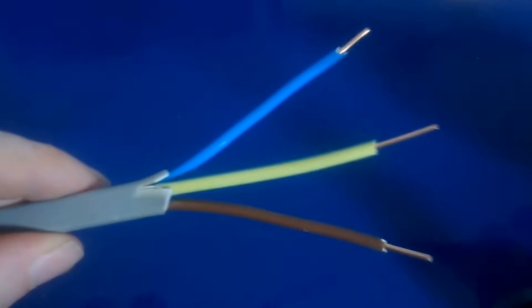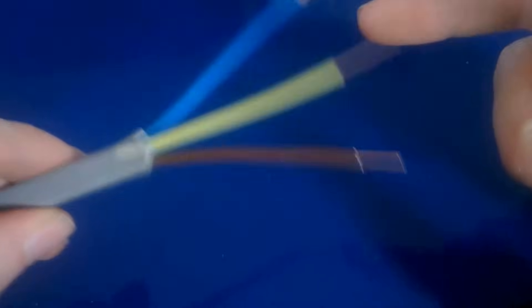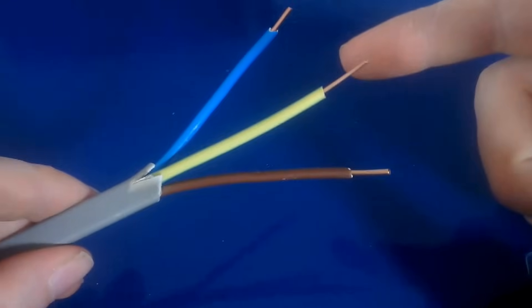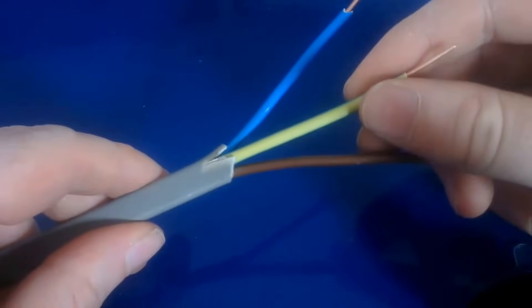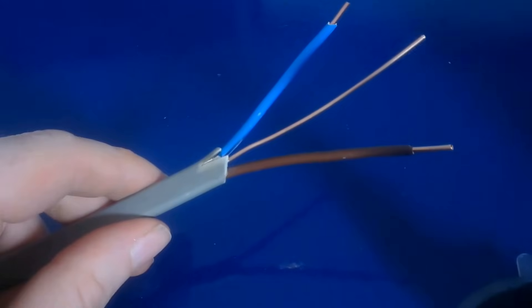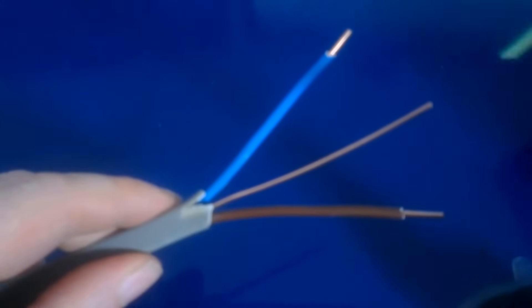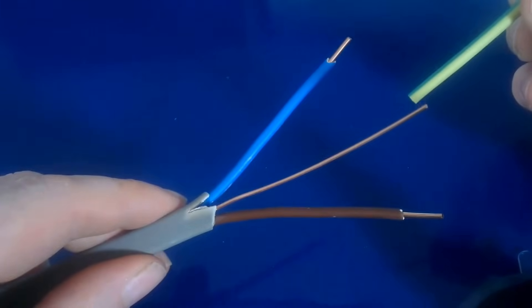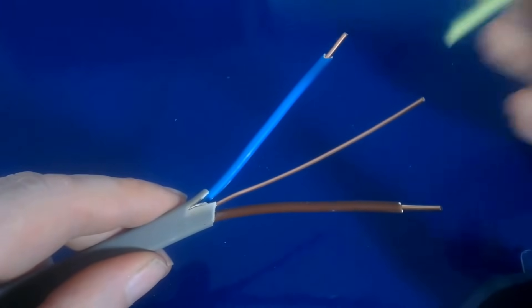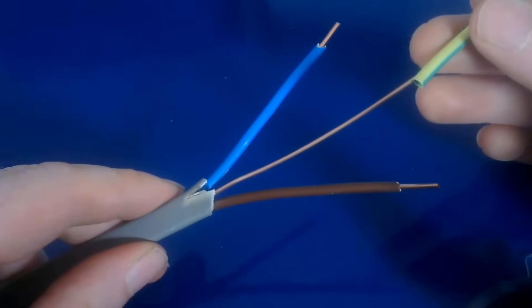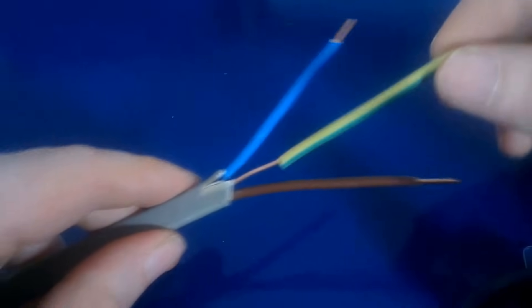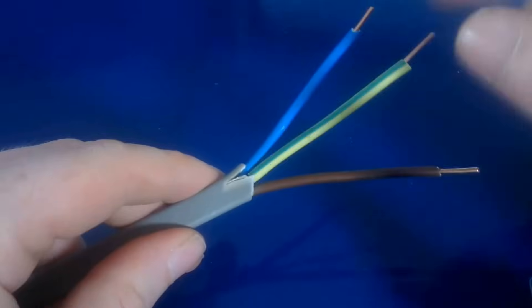Now I've got here a blue core, a brown core, and an earth core. This earth core is sleeved with a bit of earth sleeving. If you have a brand new bit of wire, it just comes with a bare earth. So the electrician installing it is supposed to put a bit of earth sleeving over it to identify it as an earth cable - green and yellow.